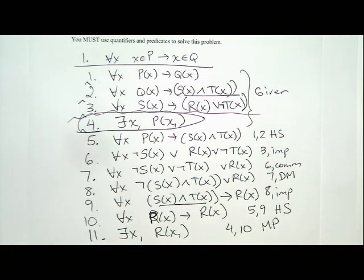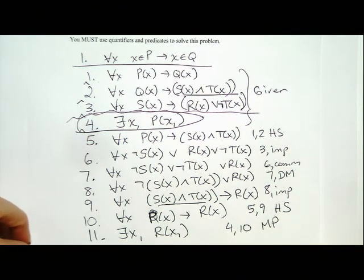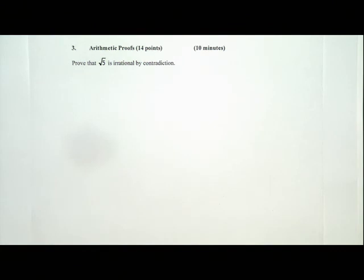Combine that with line 4 using modus ponens to get: there exists X1 such that R of X1. You'll lose approximately 4 points if you don't use predicate calculus — if you write Q implies R with no X's and no for-alls, you lose about a third of the points. You may choose to do that — you have to decide which grade you want and how much work you're going to do.